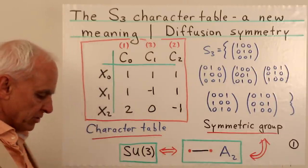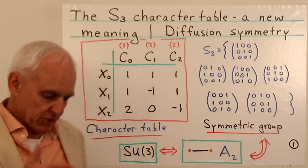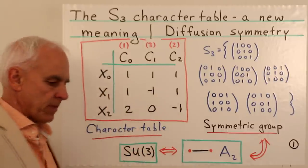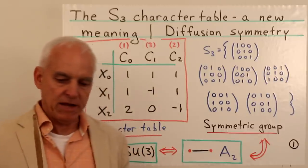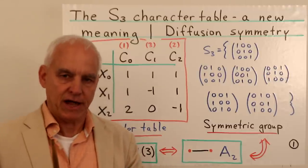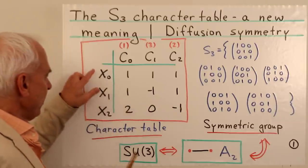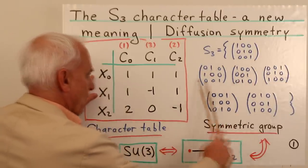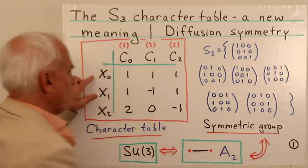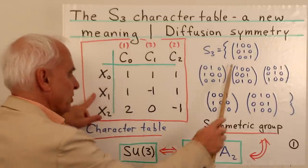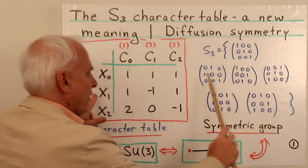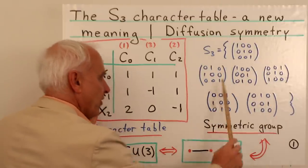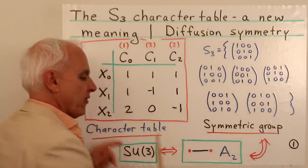The character table gives us the values of the three characters X0, X1, X2 — functions on the conjugacy classes. X0 is the function which is 1 on all three classes. X1 is 1 on C0, minus 1 on C1, and 1 on C2. X2 is 2 on C0, 0 on C1, and minus 1 on C2. You can also think of these as functions on the group that happen to be constant on conjugacy classes.